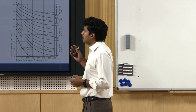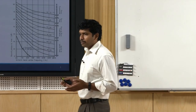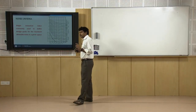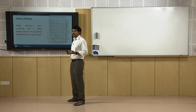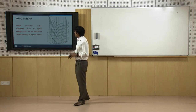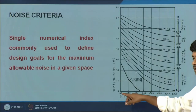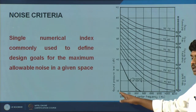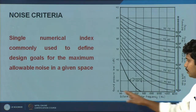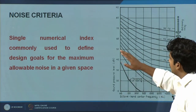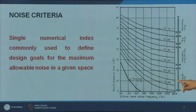Noise Criteria (NC) is a single-number index intended to define the design goals — how much should be the allowable background noise level in a given space. Instead of specifying overall sound pressure level or L-equivalent, this is a better indicator. It derives from NC curves. On the X-axis you have octave band center frequencies covering from 63 Hz all the way up to 8000 Hz, and on the Y-axis you have sound pressure level in decibels. Defined contours have been evolved.